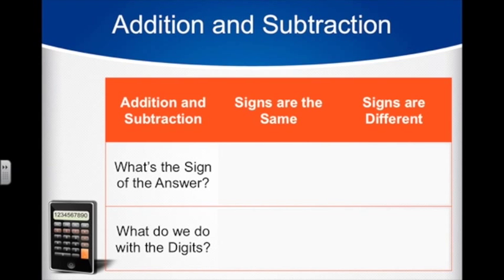We have some rules that are helpful for doing addition and subtraction when negatives are involved. Here you have to consider two aspects to each problem. First, you need to determine what sign your answer will have. Then you have to determine what to do with the digits.